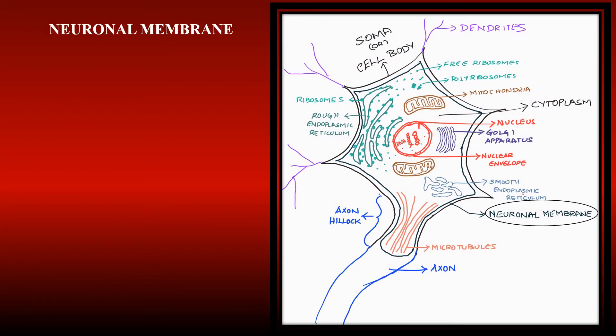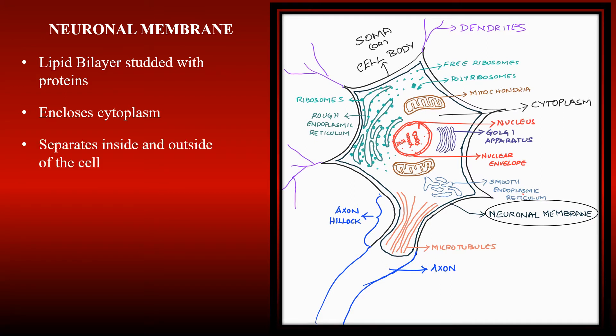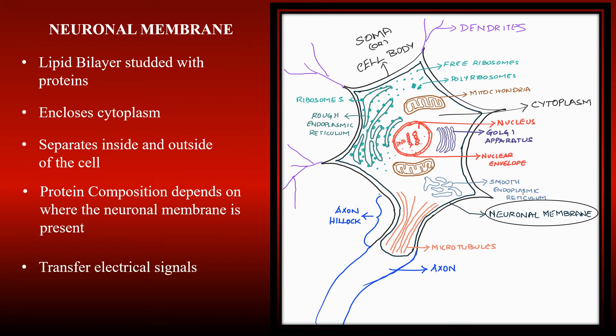The cell membrane of a neuron is called the neuronal membrane. It is a lipid bilayer studded with proteins and is approximately 5 nanometers thick. It encloses the cytoplasm and separates the inside and outside of the neuron. It allows the transport of substances in and out of the neuron. The protein composition of the neuronal membrane depends on where the membrane is located, whether it is the soma, dendrites, or axon. The neuronal membrane proteins are involved majorly in transfer of electric signals throughout the brain and body.